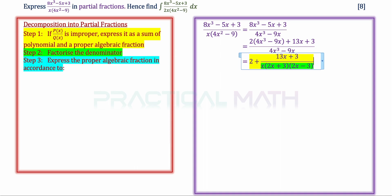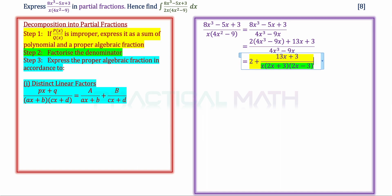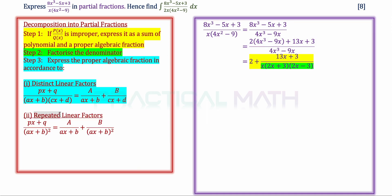Now moving on to step 3, we go back to expressing it in proper algebraic fractions according to the next cases. Case 1: distinct linear factors. By distinct linear factors, we refer to linear factors at the denominator with power of 1 for the x's, and they are distinct because they are different from each other. We express the first linear factor ax plus b as A over ax plus b, and the second distinct linear factor cx plus d as B over cx plus d.